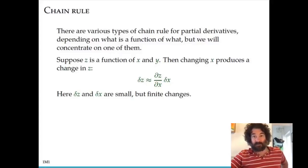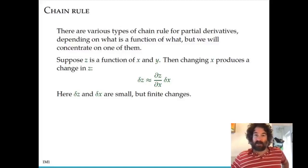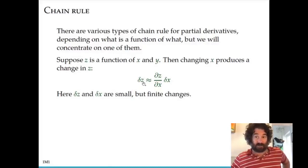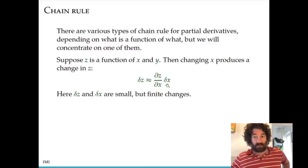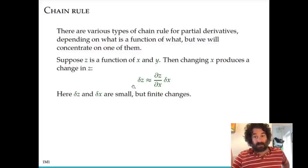So if you make a small change in x and hold y constant, that results in a change in z. In the linear approximation, the change in z that results from a small change in x is given by this formula: the change in z, delta z, is approximately the partial derivative of z with respect to x times the change in x. If you divide through by delta x, the change in z divided by the change in x is approximately the partial derivative. Taking the limit as delta x goes to zero gives you the exact partial derivative.